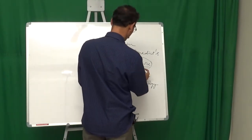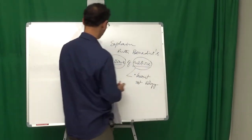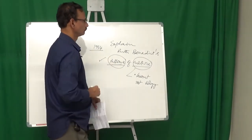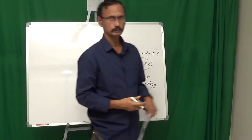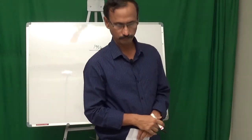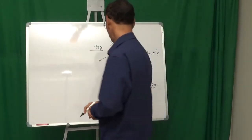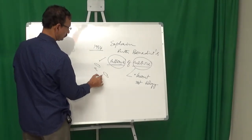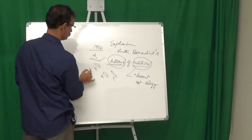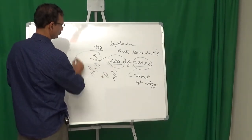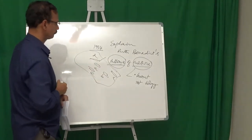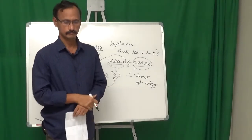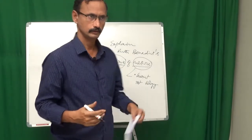So a culture according to her has a pattern. What is meant by pattern? Patterns means various elements of culture, A, B, C, D, E. Various elements of culture are related in a way. There is a pattern.